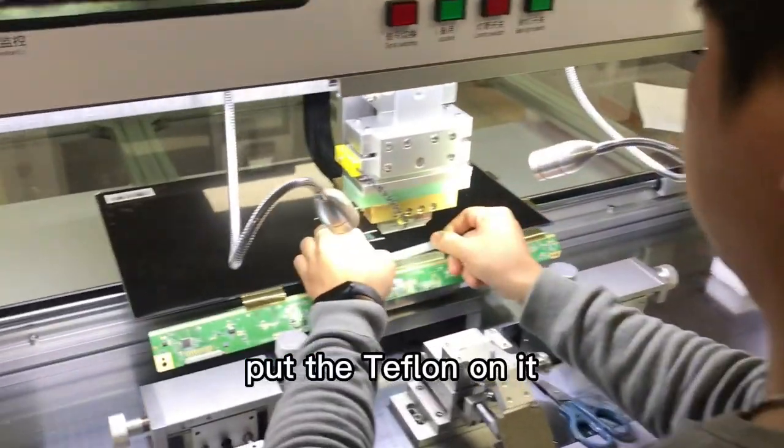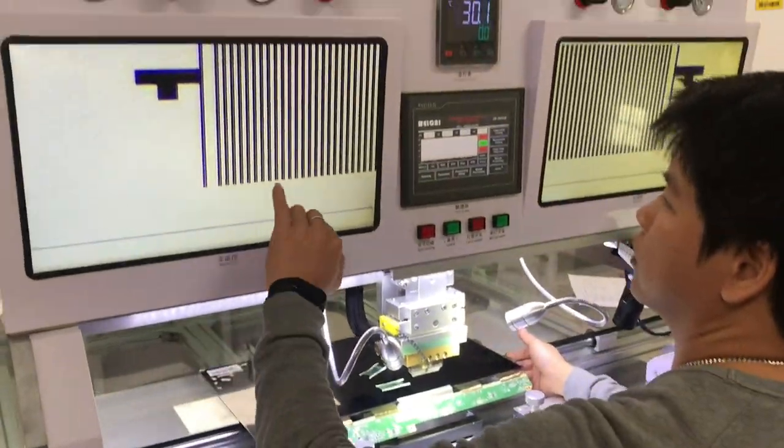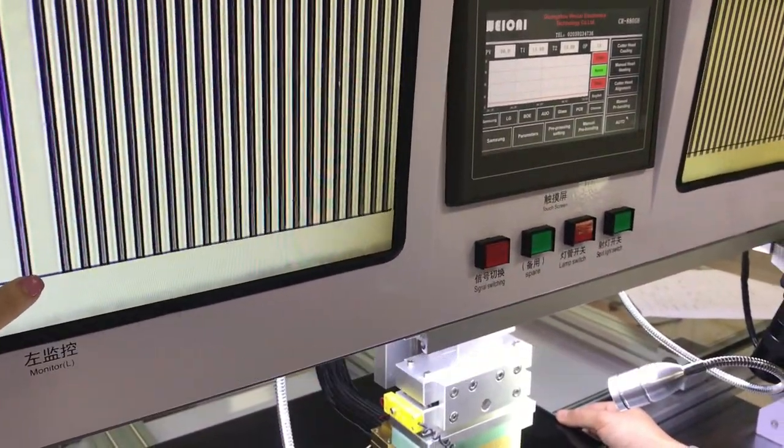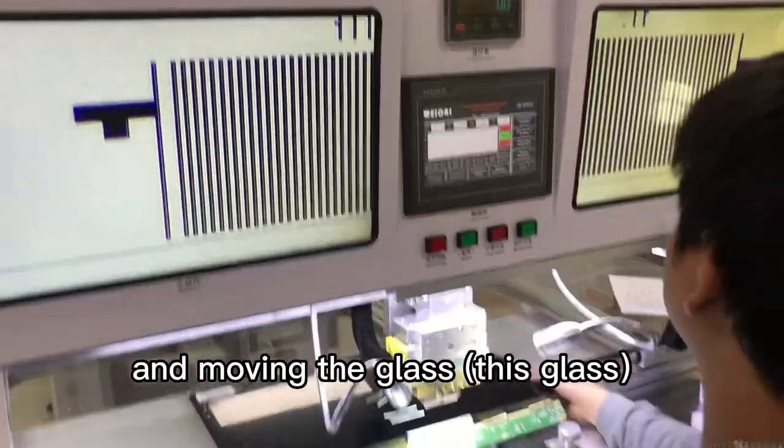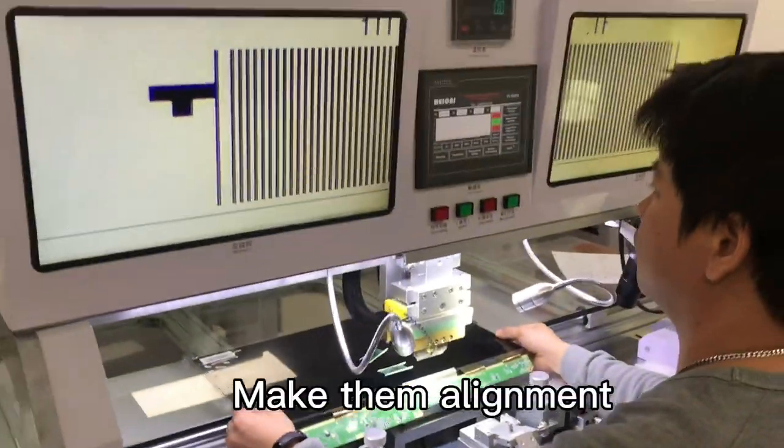Put the teflon on heat. This line should be alignment with this one. Move in the glass, medium alignment.